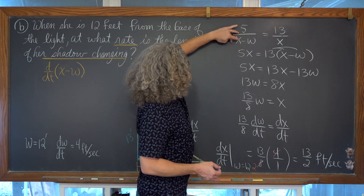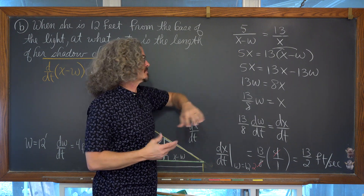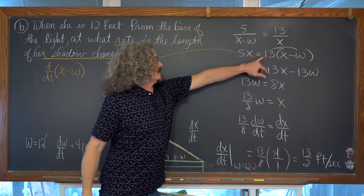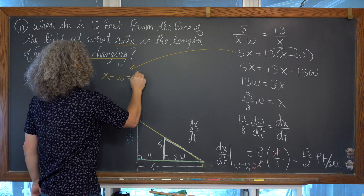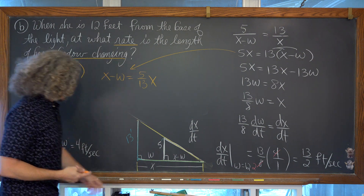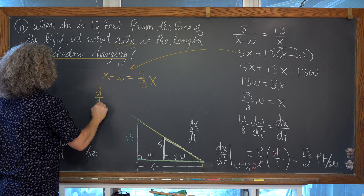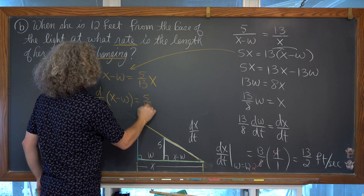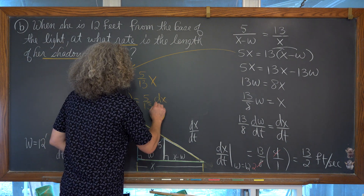We have 5 over (x minus w) equals 13 over x. Cross multiplying and then dividing both sides by 13 to isolate the shadow length expression gives us x minus w equals (5/13)x. Now bringing in derivative notation: d/dt of (x minus w) equals (5/13) times dx/dt.